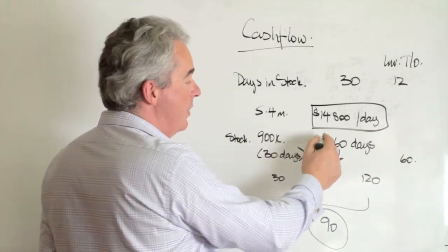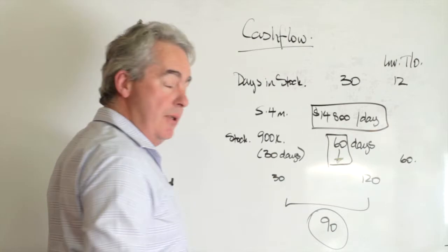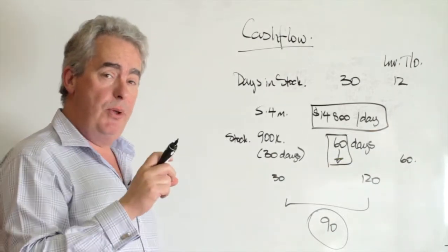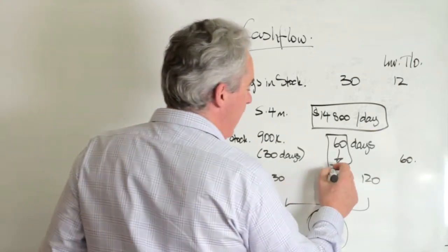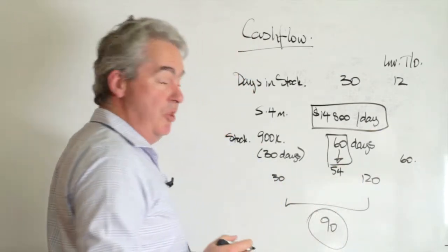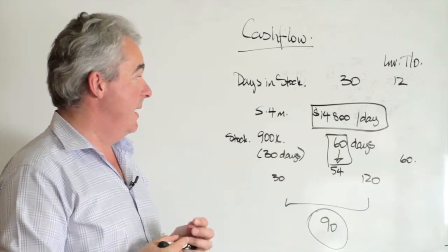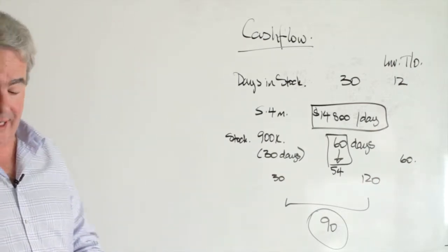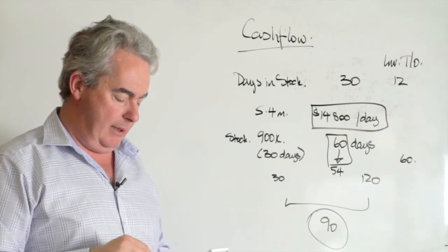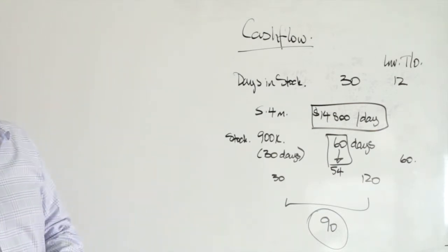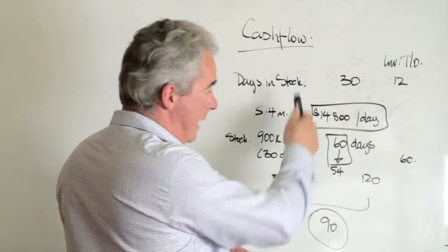We did a concentrated effort. We set up some new reporting mechanisms, some new purchasing mechanisms for their business, and we reduced their stock holdings to about 54 days, which was pretty good given their industry. Six times $14,800 by six. This is the power of cash flow and understanding how it works.